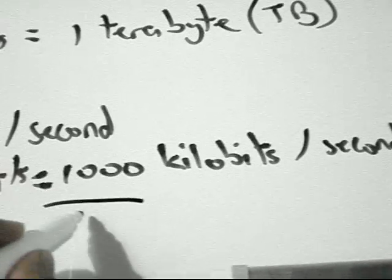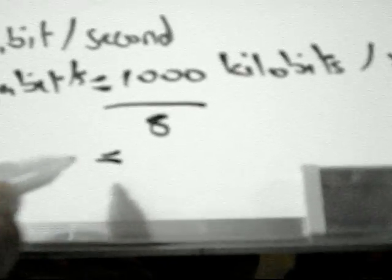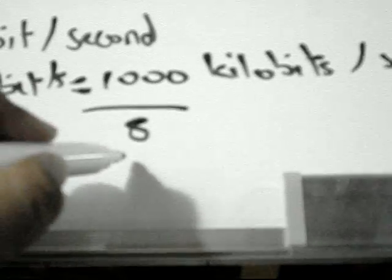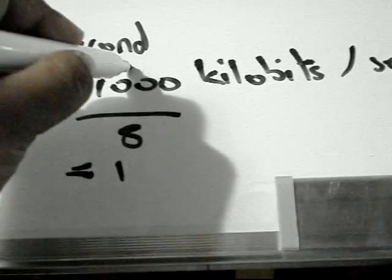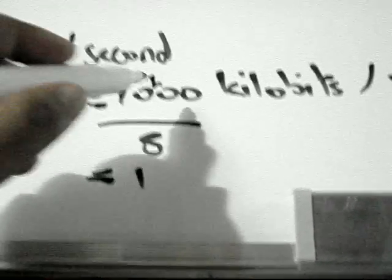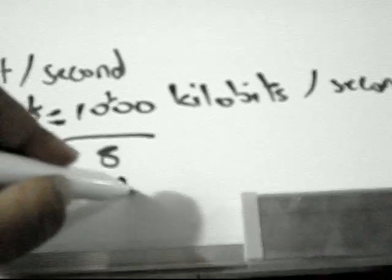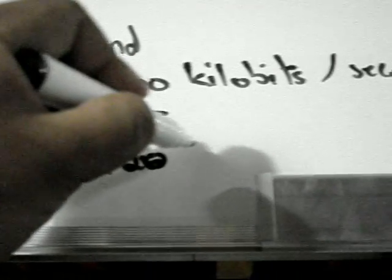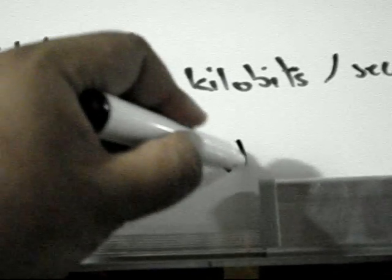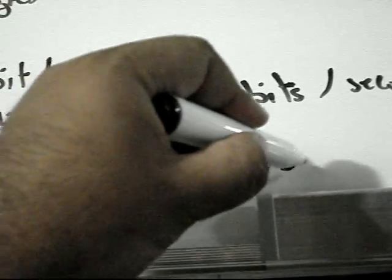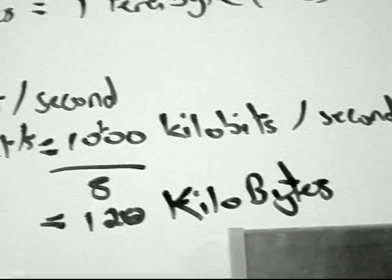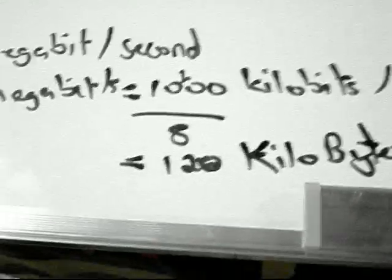So basically what we're saying is, if you have a DSL modem at one megabit, it actually is downloading one thousand kilobits per second. To understand what this is in terms of bytes as opposed to bits, you would divide by eight. So to get the speed in terms of kilobytes per second, you could do like an average: let's just say average is 120 kilobytes with a capital B. And this is what we are accustomed to.